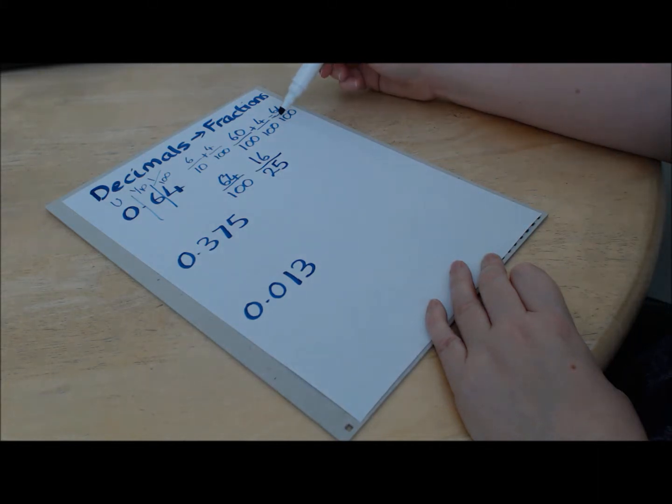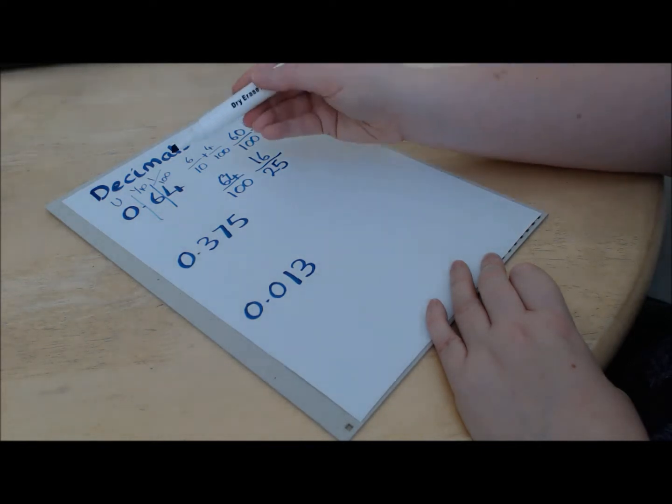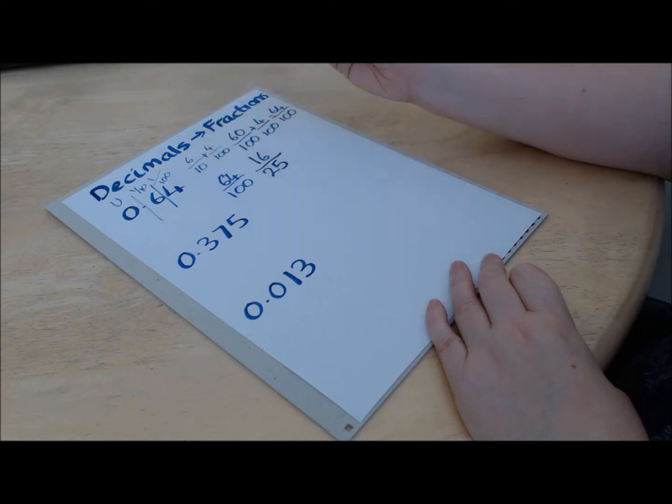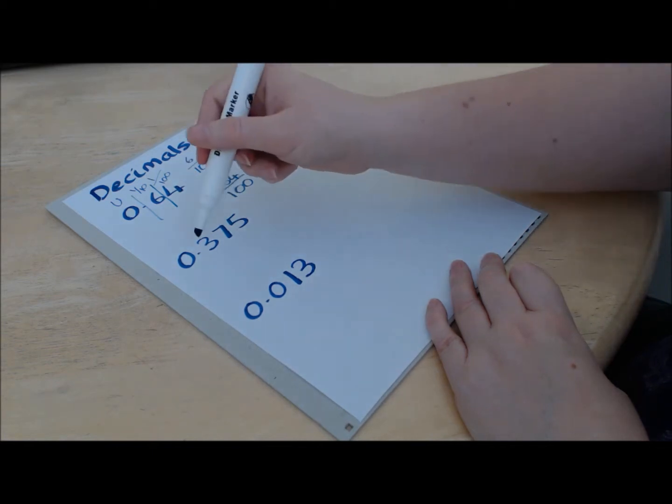So what we notice is that the bottom of our starting fraction was 100 and the smallest part of our decimal was hundredths. So we can apply that to this next one.